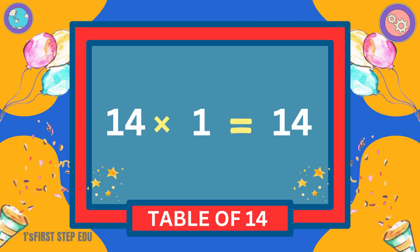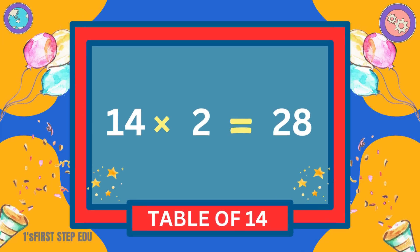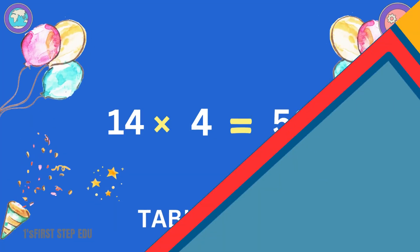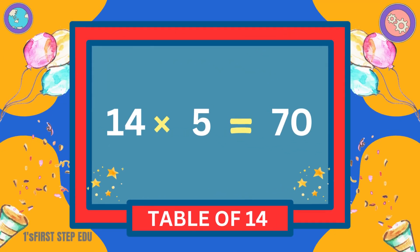Table of 14. 14 ones are 14. 14 twos are 28. 14 threes are 42. 14 fours are 56. 14 fives are 70.